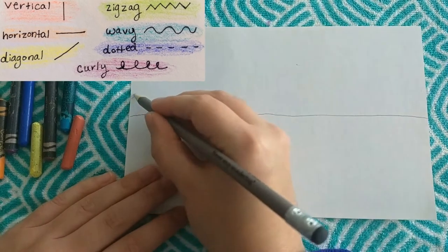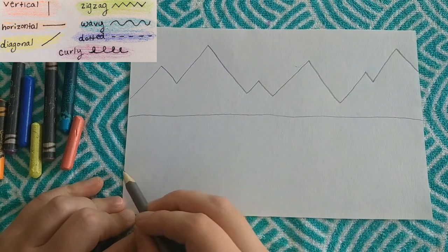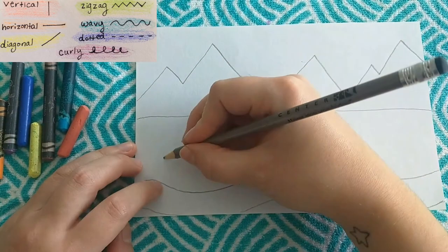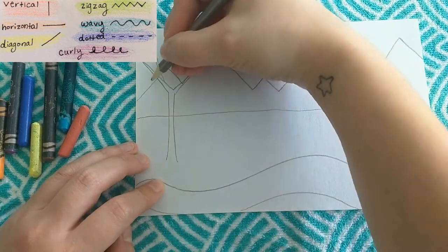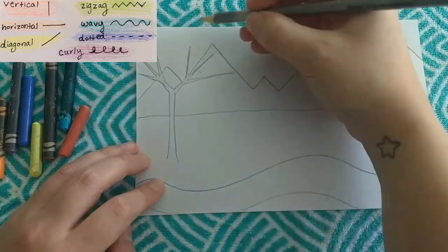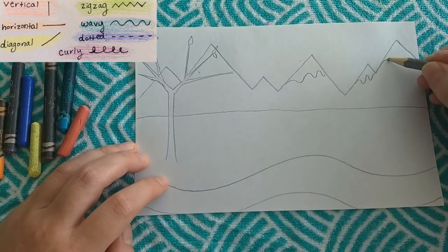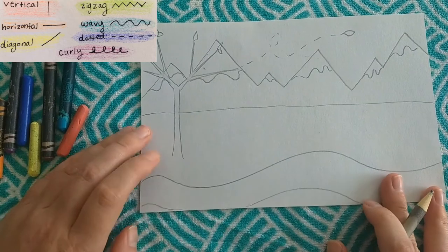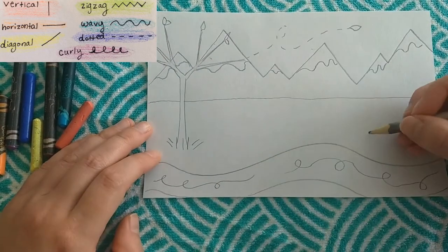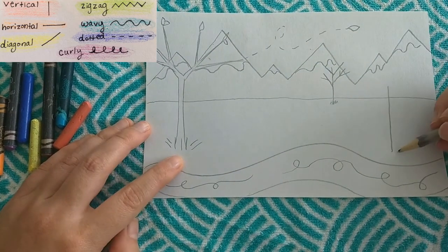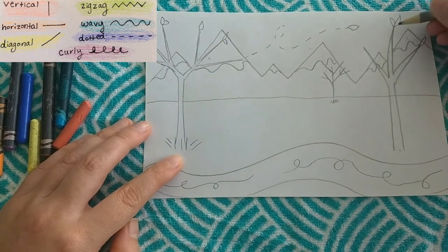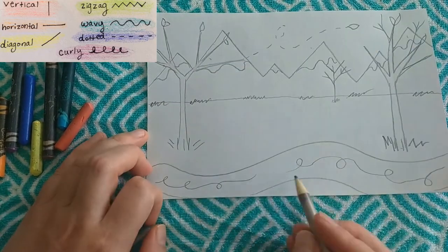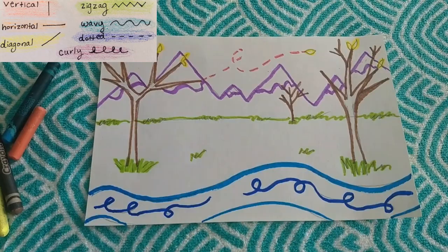All right, we've got a horizontal line to start and zigzag lines. A curvy line for a river. How about some vertical lines and diagonal lines to create a tree. Some more wavy lines on the mountains. A dotted line to show my leaf glowing in the wind. And some curly lines in that river. A few more diagonal and vertical trees. And a few zigzag lines to add texture on the grass.